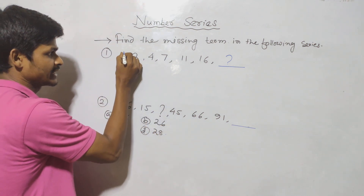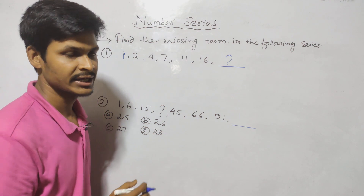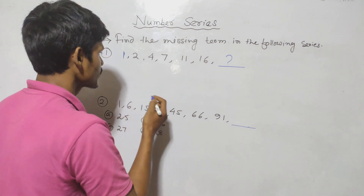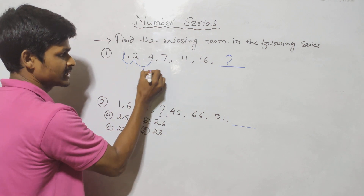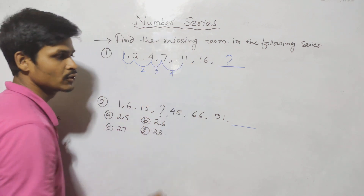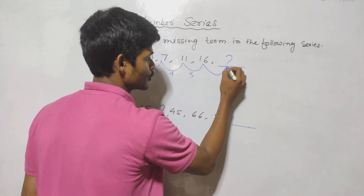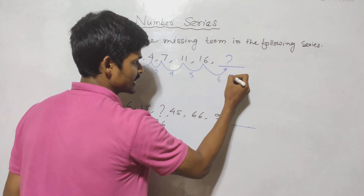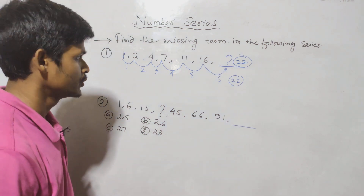The gap is a little gaping. We have to look at minus or plus. In the first one, the second one is 2 — meaning 4 minus 2 equals 2. Then 7 minus 4 equals 3. Then 11 minus 7 equals 4. Then 16 minus 11 equals 5. The next gap is 6. So 1, 2, 3, 4, 5, 6 — meaning 16 plus 6 equals 22. The answer is 22.